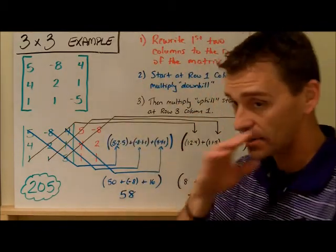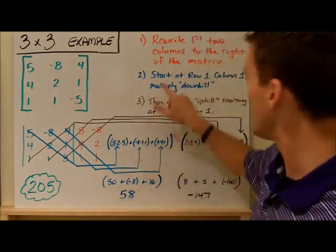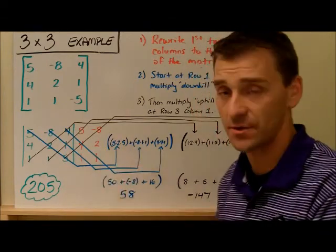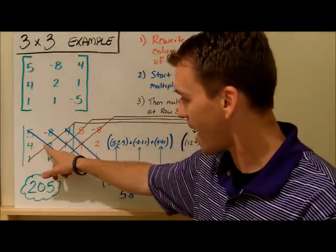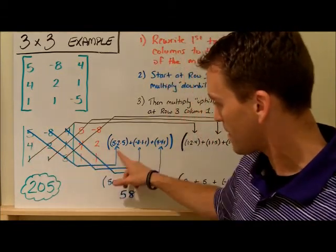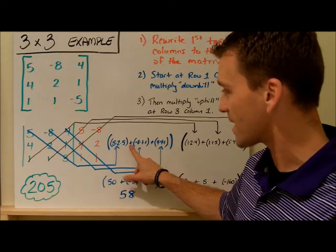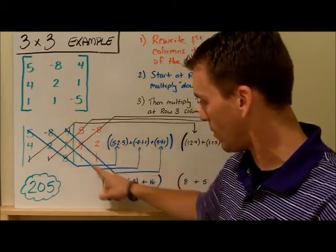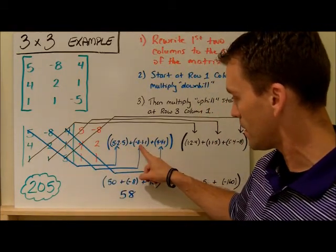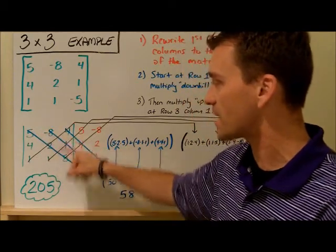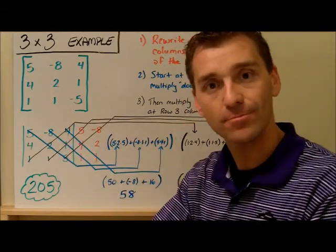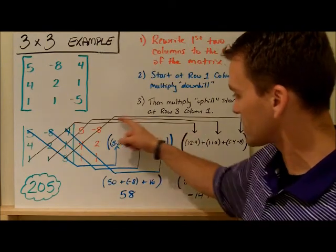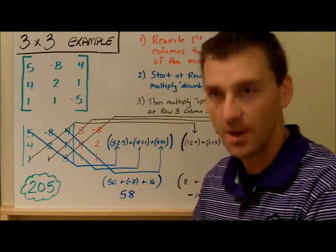Step number two: it's easier to coast downhill first, so that's where we start. You always start at row one, column one, that entry, and you multiply downhill diagonally. You have to do this three times. So five times two times five gives that first result. Then you go to row one, column two and go downhill: negative eight times one times one. Then one more spot — four times four times one. All the downhill stuff is grouped together.